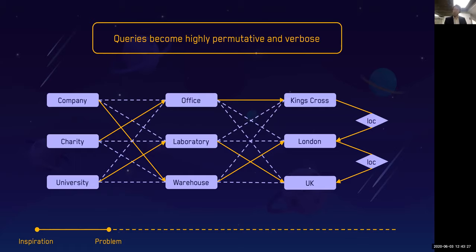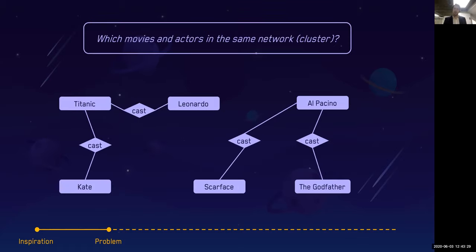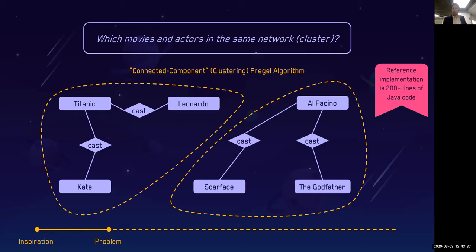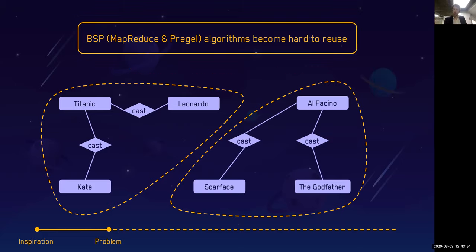On the analytical side, when we think of things like which movies or actors are in the same cluster in some movie domain, we may want to use something like a practical algorithm, a connected component algorithm. The reference implementation in Java is over 200 lines of code. The point we're trying to make is that these types of BSP algorithms are very hard to reuse, especially because we can't use them across our data sets.